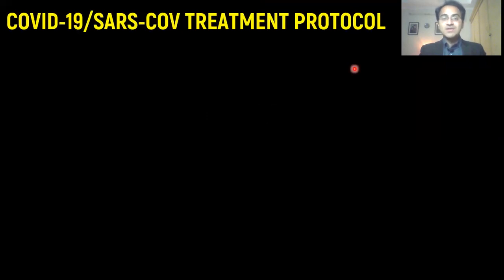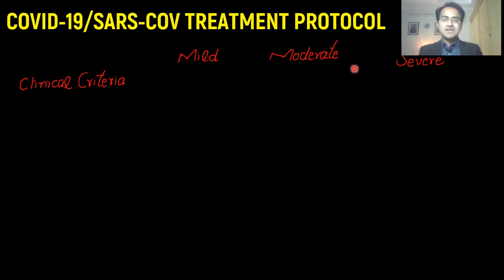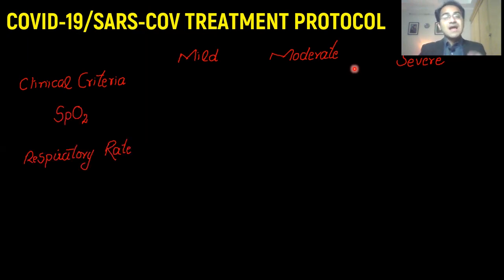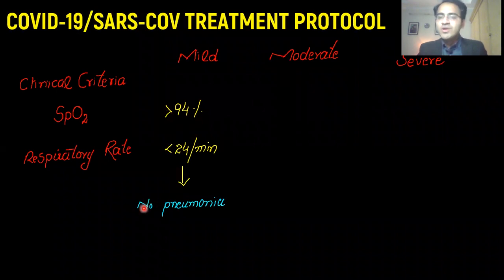When you have diagnosed a patient with COVID-19 coronavirus, the first thing you need to do is classify the patient into mild, moderate, and severe category. You classify a patient on the basis of oxygen saturation and respiratory rate. If the saturation is greater than 94% and respiratory rate is less than 24 per minute, the patient is a mild case. This mild case can be treated at home and is classified as no pneumonia.